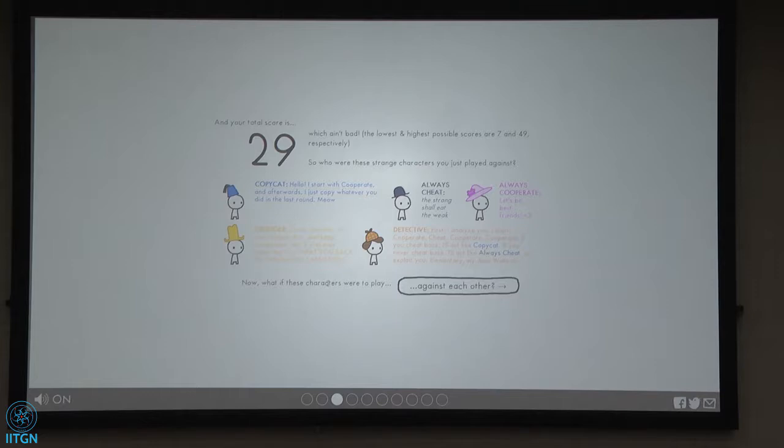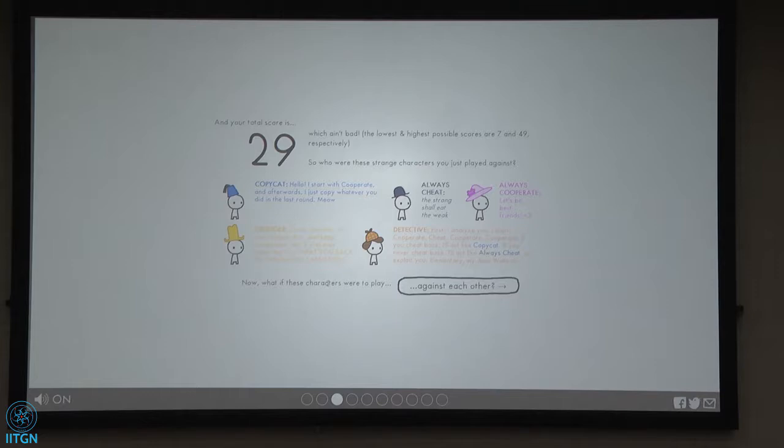So, these were the people you played with. Your total score was 29, which is all right. You just go back and think about what happened. The first player was Copycat. And he would just copy your last move. So if you cheated in this round, he would cheat you back in the next round. If you cooperated in this round, he would cooperate in the next round. The next two players were the always cheaters and the always cooperators.